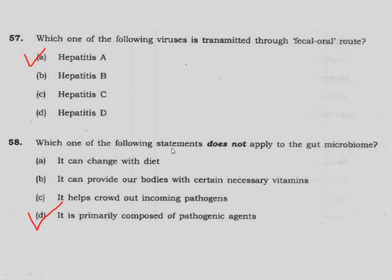Which one of the following statements does not apply to gut microbiome? The gut microbiome is the microbial community which remains in our gut. It helps crowd out incoming pathogens — that is correct. Option D states it is primarily composed of pathogenic agents — this is wrong, because in the gut microbiome there are no pathogenic microorganisms; there are microorganisms which are beneficial. So this statement is wrong.